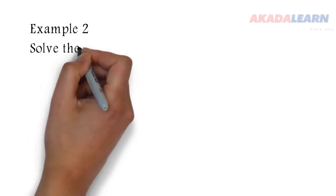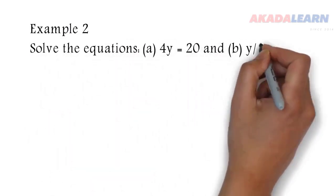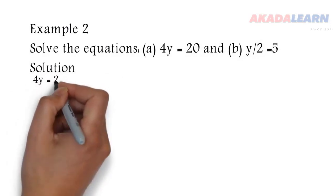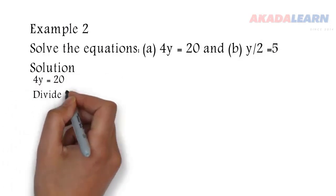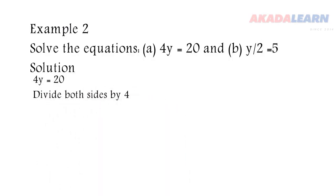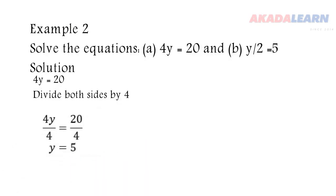Let's see another example. Example 2: solve the equations 4y = 20 and y/2 = 5. So 4y = 20. To make y stand alone, I will need to divide both sides of the equation by 4. So 4y over 4 is equal to 20 over 4. So y is equal to 20 divided by 4, which is 5.